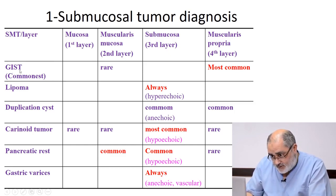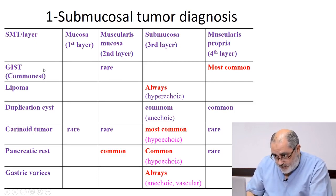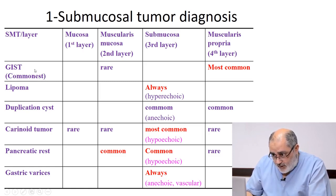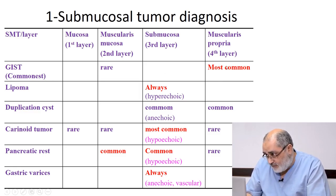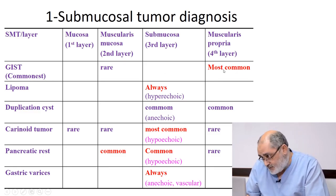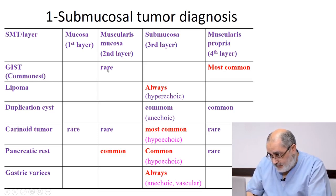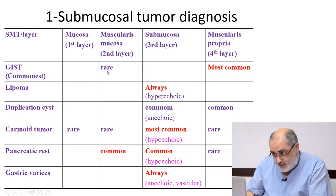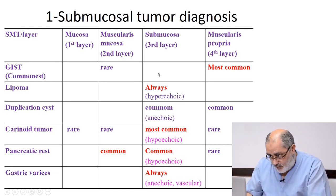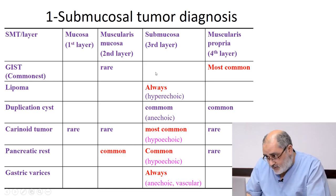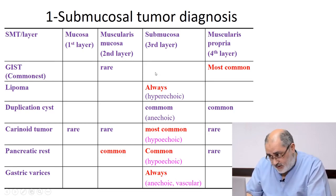The commonest submucosal tumors are gastrointestinal stromal tumor (GIST), leiomyoma, and schwannoma. All three most commonly originate from the fourth layer, muscularis propria — they are muscular tumors. About 90% of these tumors arise from the fourth layer, but they may also arise from the second layer, the muscularis mucosa. They are usually hypoechoic or hyperechoic, may show areas of breakdown and some vascularity, and commonly present with bleeding and hematemesis.